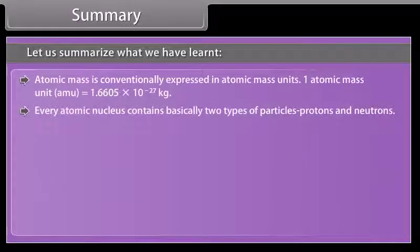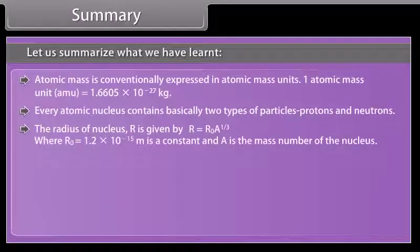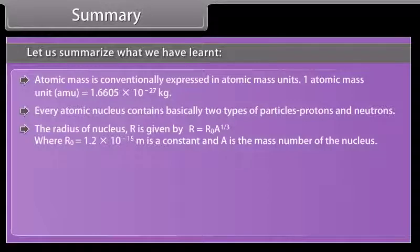Every atomic nucleus contains basically two types of particles: protons and neutrons. The radius of nucleus R is given by where R naught is equal to 1.2 times 10 to the power minus 15 m is a constant, and A is the mass number of the nucleus.